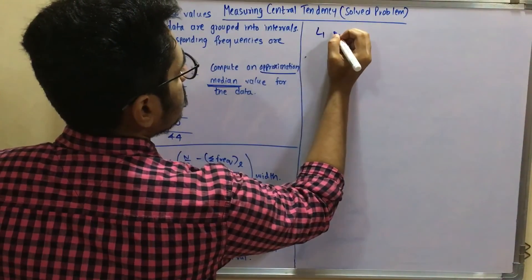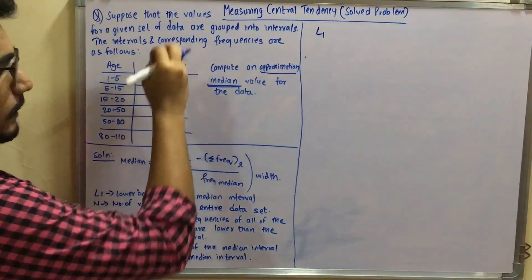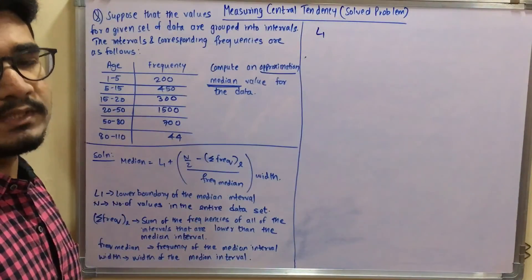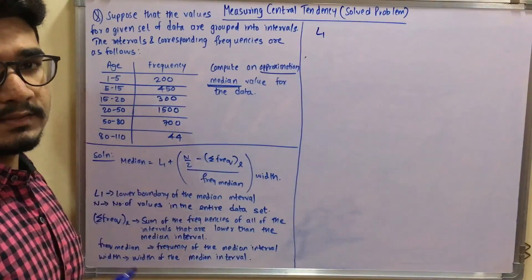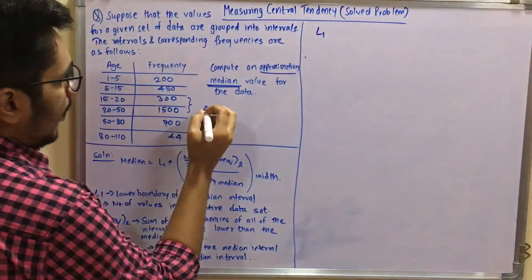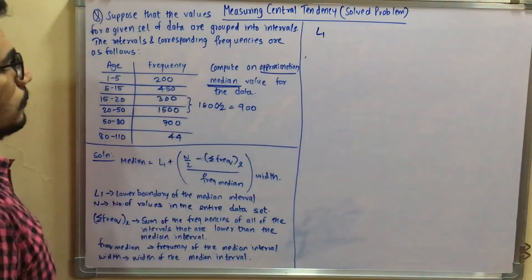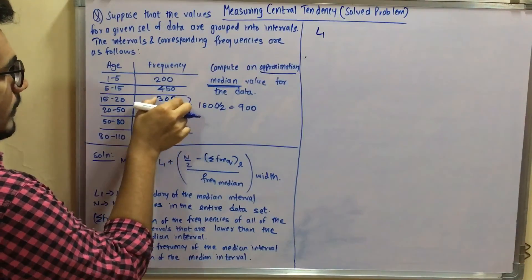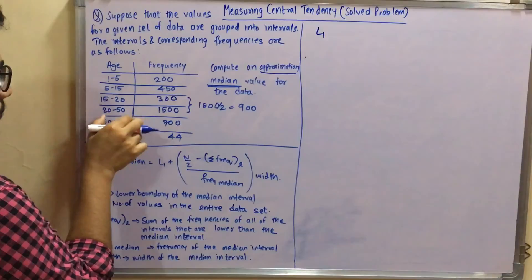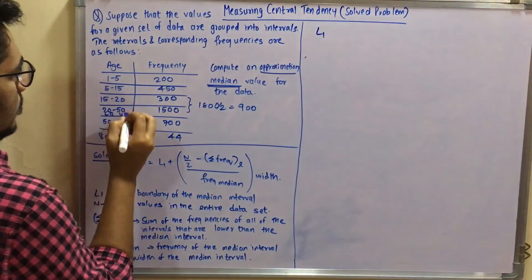Let's find L1, the lower boundary. The data has six values — one, two, three, four, five, six. Since n is even, we take the middle two values and compute their average: 300 plus 1500 equals 1800, divided by 2 gives 900. So 900 falls in the range 20 to 50. Therefore the median interval is 20 to 50, where 20 is the lower boundary (LB) and 50 is the upper boundary (UB), so L1 equals 20.